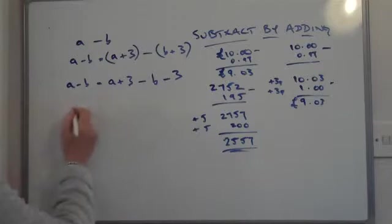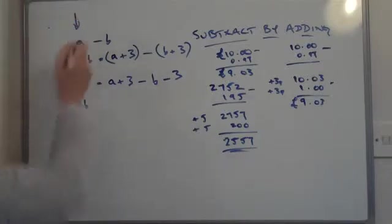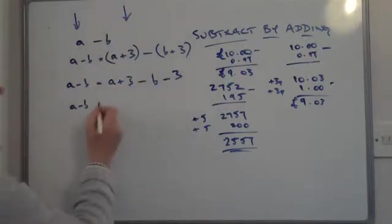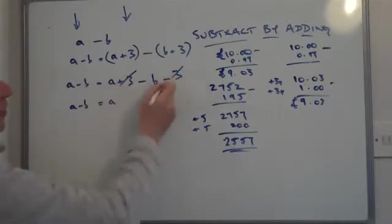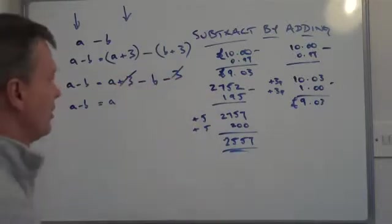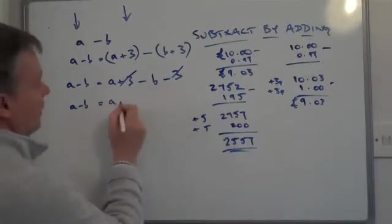So I've now got A minus B on this side because all this side hasn't changed. And on this side I've got A and I've got plus 3 minus 3. So both those two cancel themselves out, and I'm left with minus B.